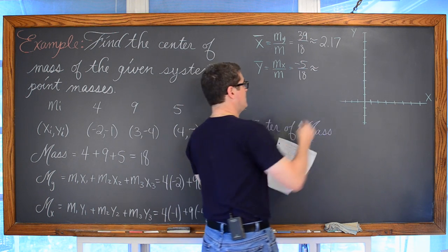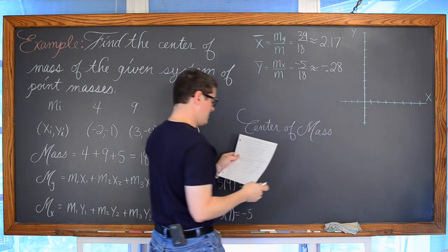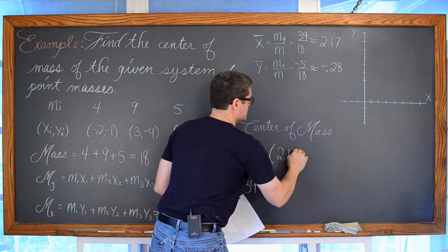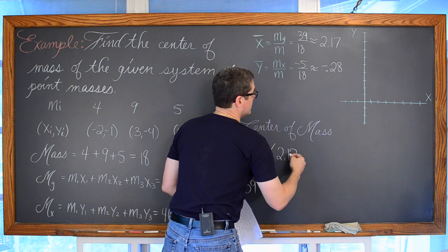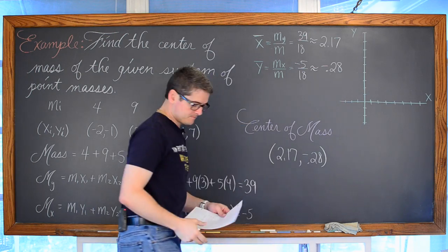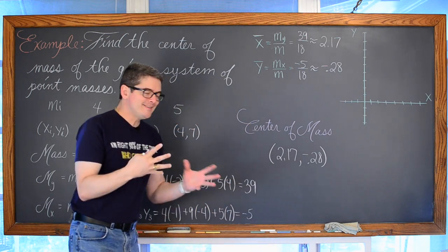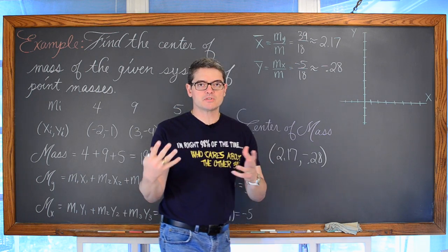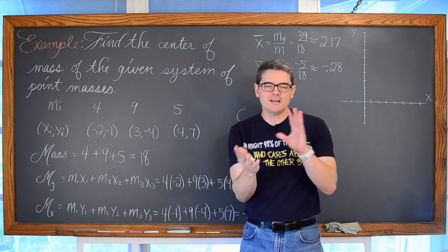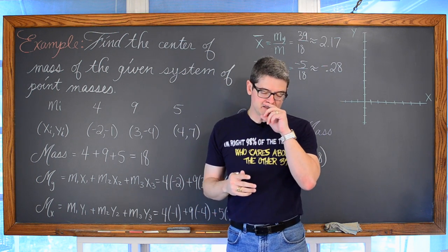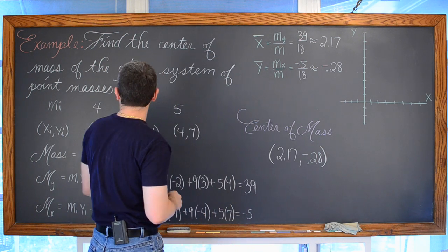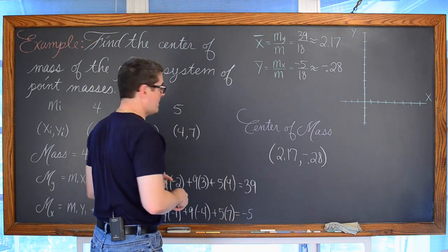Does that seem reasonable? We started this lesson with the teeter-totter analogy, and we can see what leverage is needed for particular masses to balance. So let's check our point masses against the diagram.